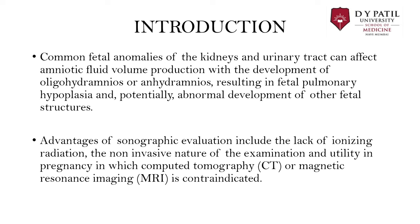Renal anomalies are classified into: number — which includes agenesis and supernumerary kidneys; position — which includes ectopic or rotational abnormality; fusion — which includes horseshoe kidney and crossed fused ectopic kidney; structural abnormalities — which include lobulation, tissue mass, cystic diseases, mesoblastic nephroma, and nephroblastomatosis; and lastly, renal vasculature pathologies.